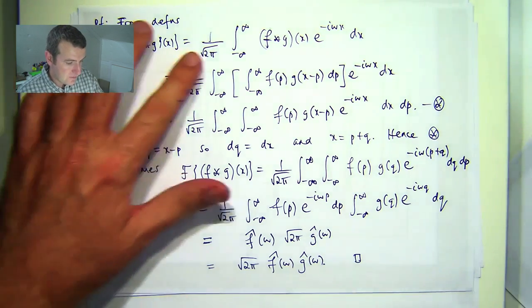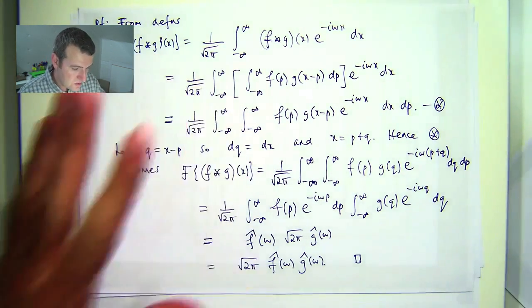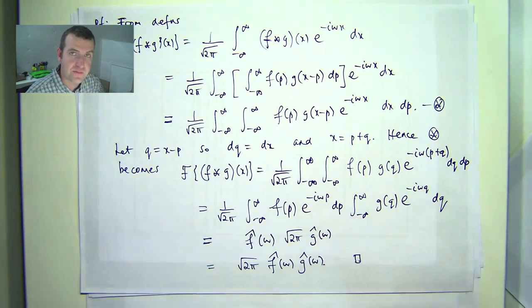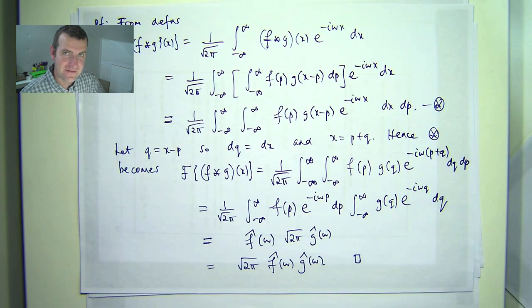As you can see, basically we just started with the definition, and we just switched the order of integration, made a substitution, and then relied on the fact that we could break this up into products of functions of one variable times product of functions of another variable.